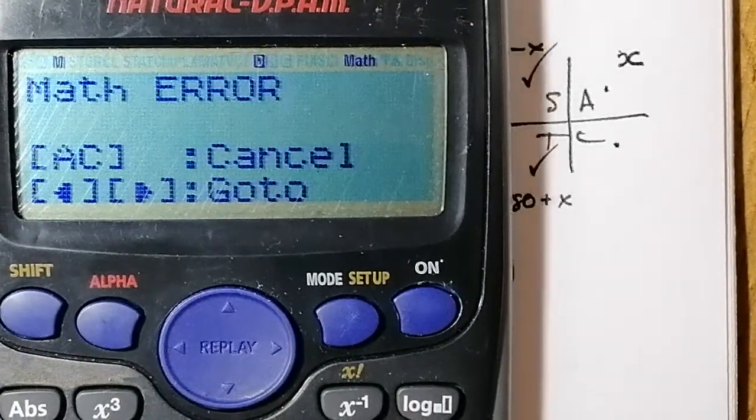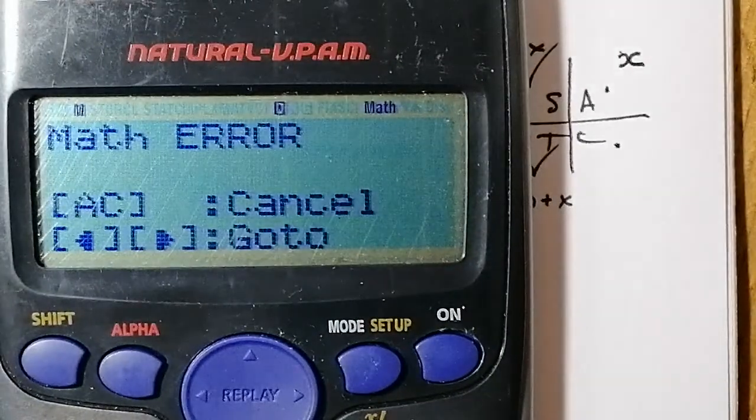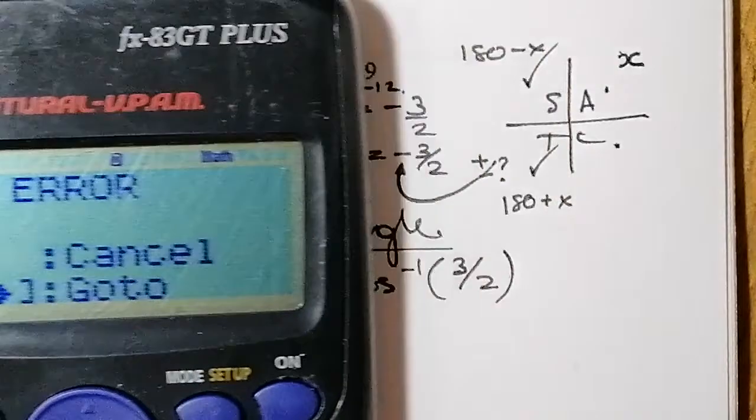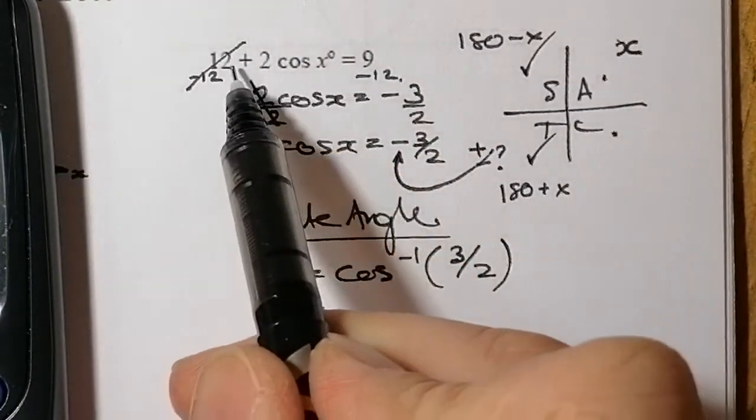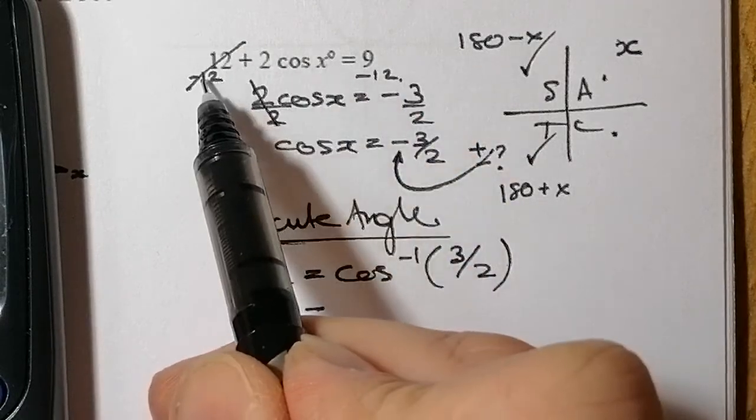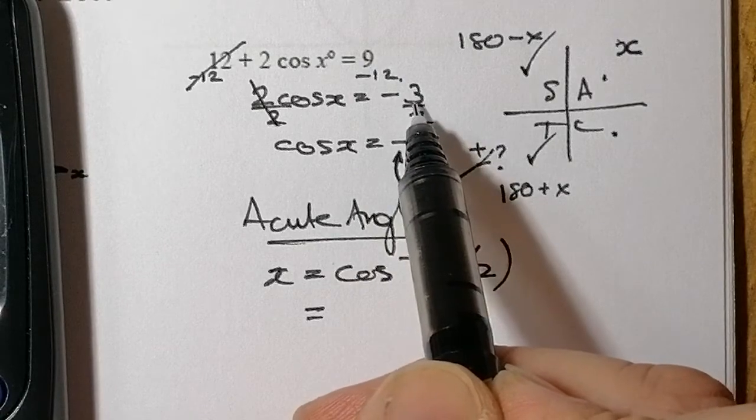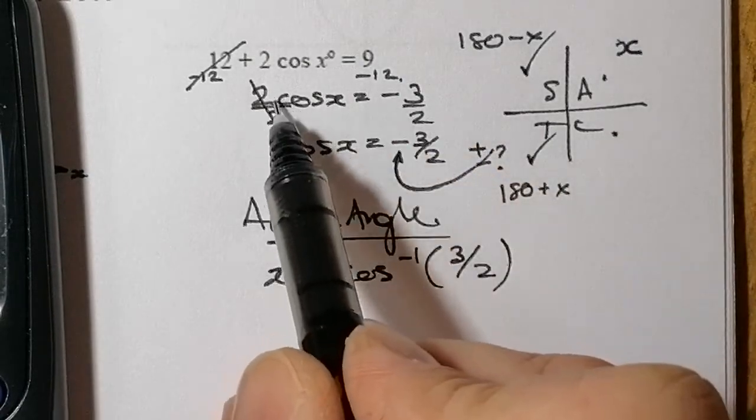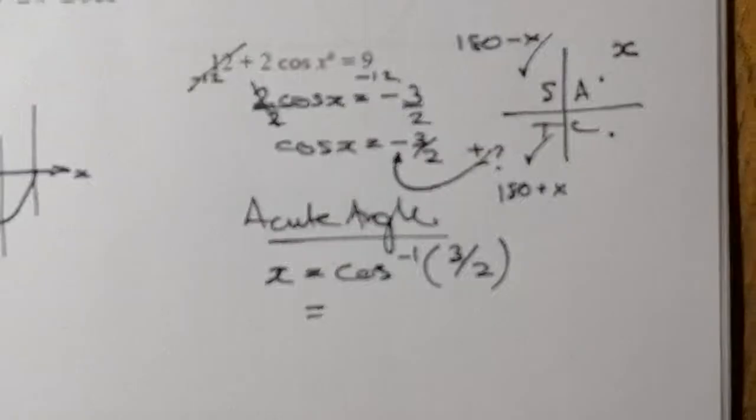So have I done something wrong? I would check my working and make sure I haven't made a mistake anywhere. To get rid of that 12 first, I took 12 away from both sides. Gave me negative 3. Yeah, it looks okay. I then divide by 2. That gives me 3 over 2. Yeah, it looks as though my working's pretty good there.